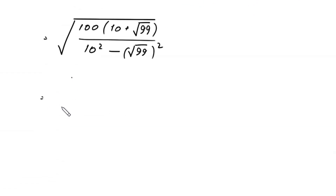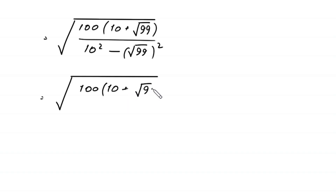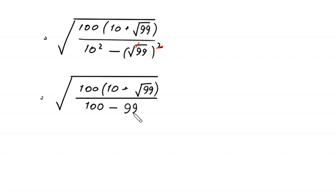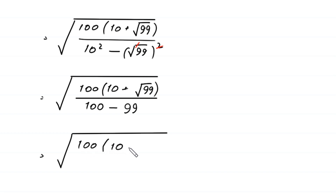Next, we have square root of 100 times (10 plus square root of 99), divided by 10 squared minus square root of 99 squared. Here 10 squared equals 100, and the square cancels with the square root, leaving 99. So the denominator becomes 100 minus 99, which equals 1.